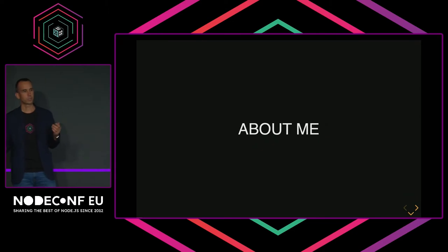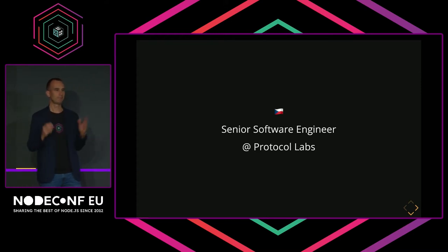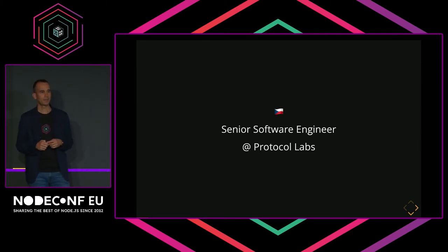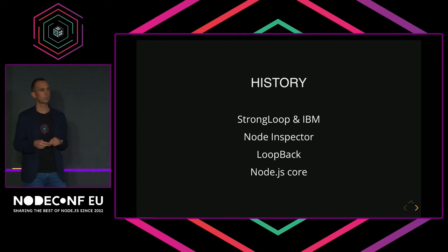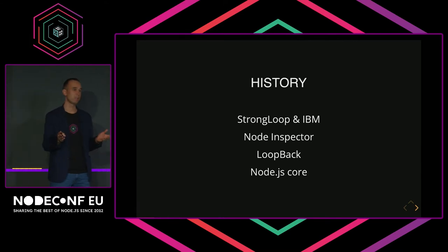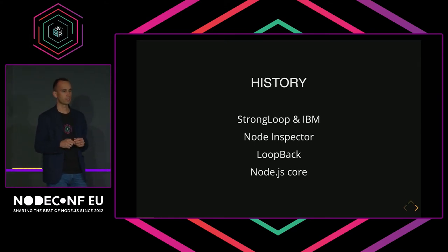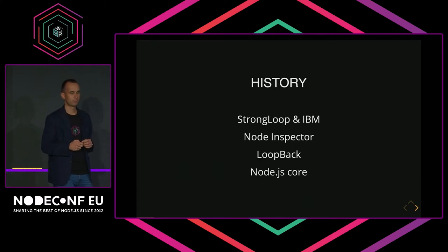A quick introduction. I'm working for Protocol Labs, building a decentralized CDN. I joined recently, I came from the lovely Czech Republic. In the past, you might know me from my work at Strongloop at IBM. I was maintaining Node.js inspector in the early Node.js days. I was leading development of Loopback, which is a REST API and ORM framework for Node.js. I also had contributions to Node.js core, for example async stack traces in the debugger.